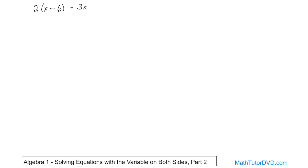So 2 times x is going to give you 2x and then you have minus and then 2 times 6 here is going to give you 12. Or you can think of it as 2 times negative 6 giving you negative 12. On the right hand side you'll just have 3x.